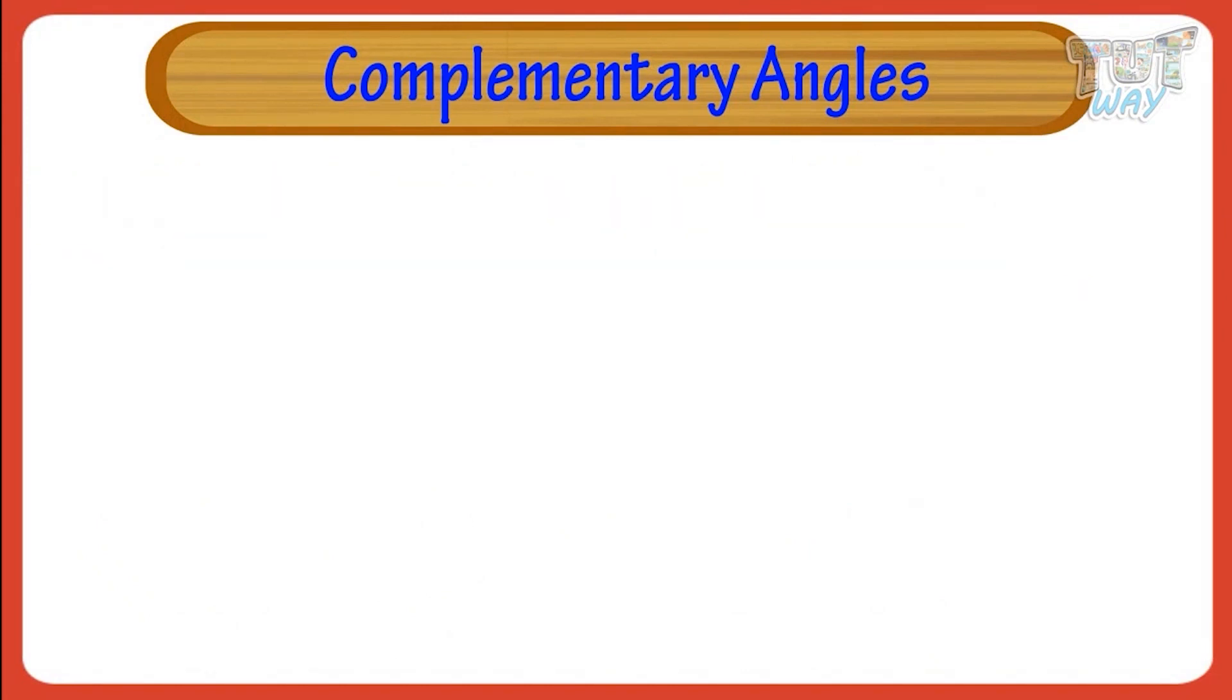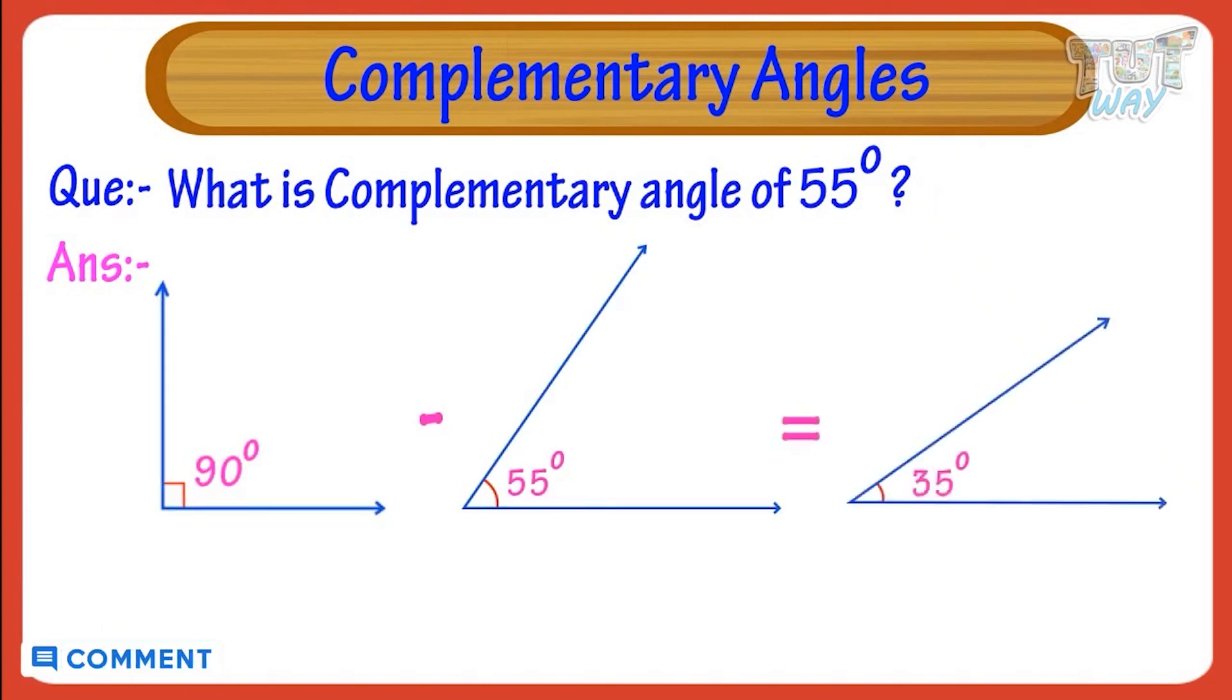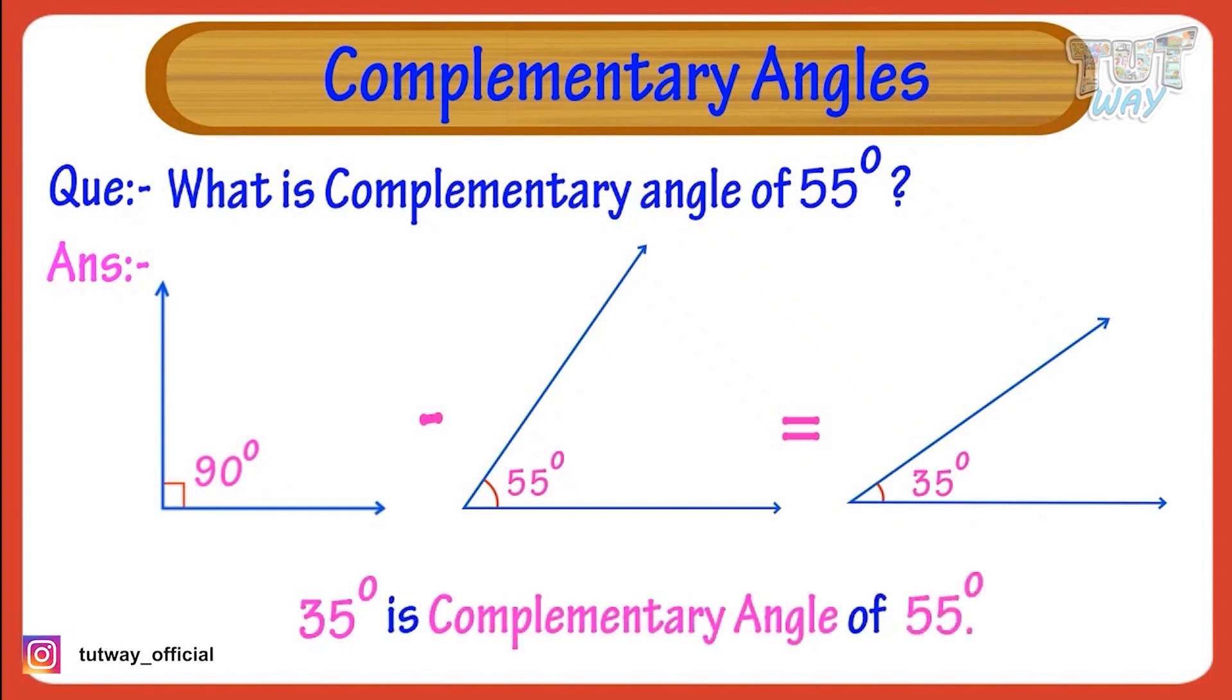Example, what is the complementary angle of 55 degree angle? For that, we will subtract 55 from 90. 90 degrees minus 55 degrees, we get 35 degrees. So, 35 degrees is the complementary angle of 55 degrees.